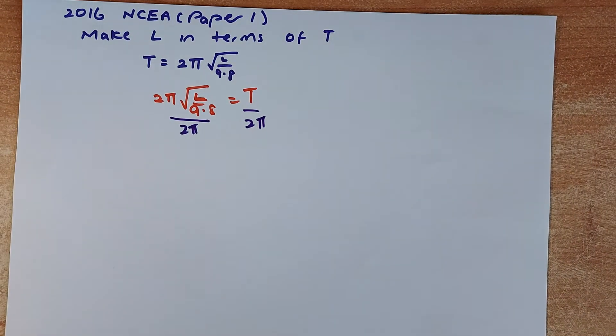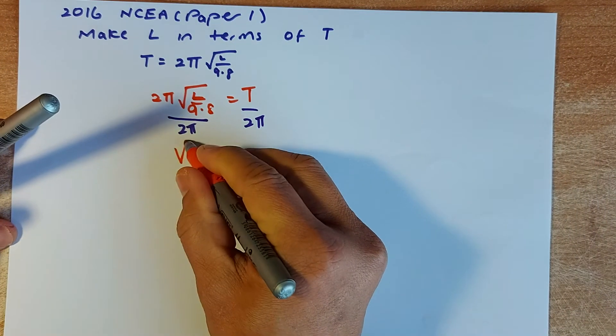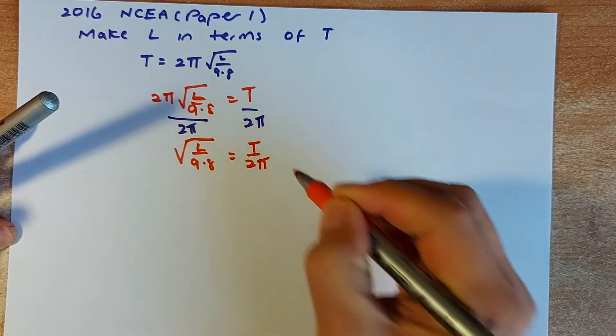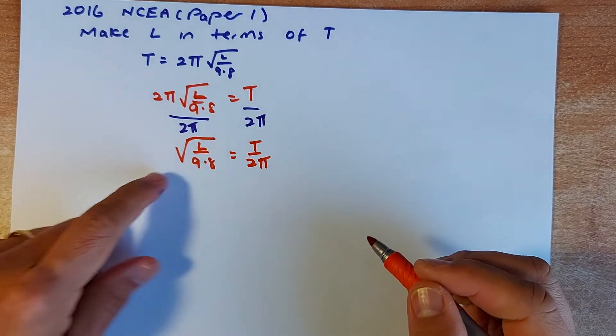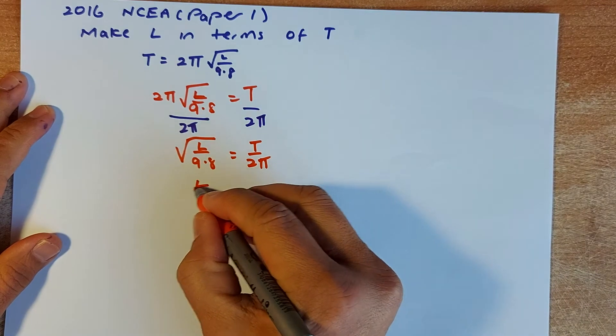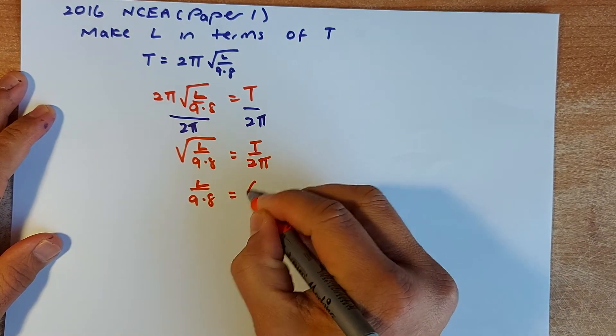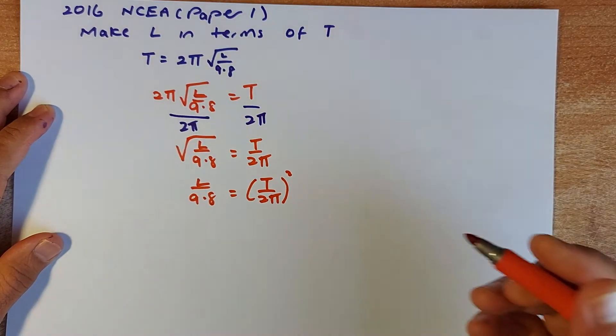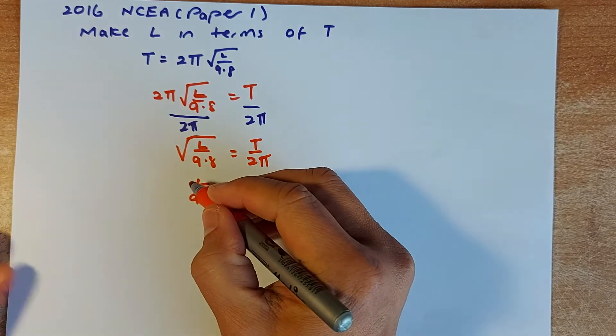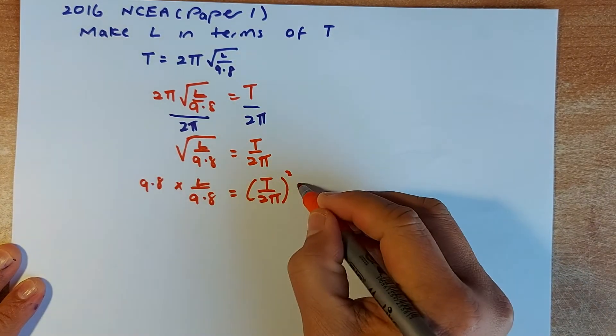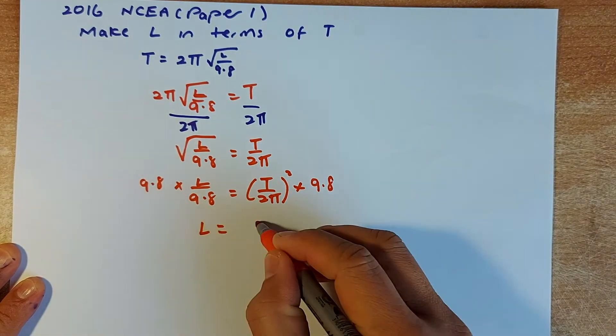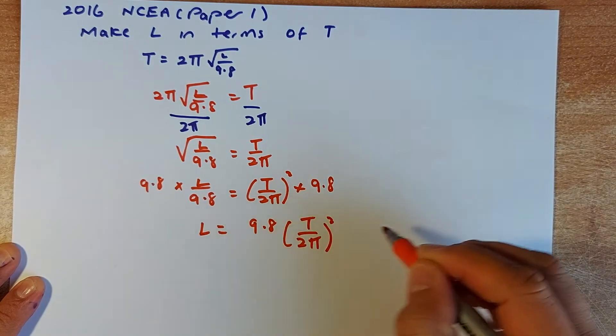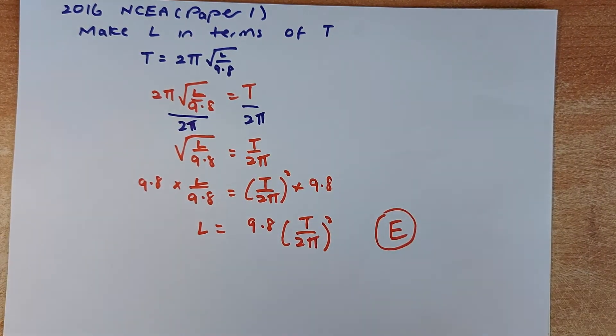So what you are left with is going to be √(L/9.8) is equal to T/2π. Then you are going to get rid of the square root. The reverse of square root is square. So L/9.8 is T/2π squared. Then the last step, you need to get rid of the 9.8. What you do, you're going to multiply by 9.8 on both sides. And that's what you do. L equals to 9.8T/2π squared. And that is an excellence. Not too bad, right?